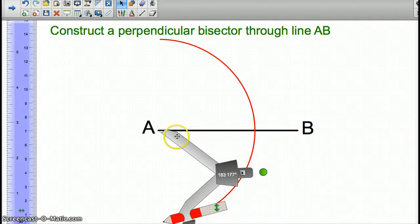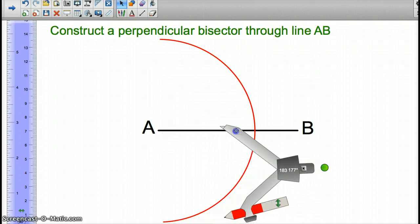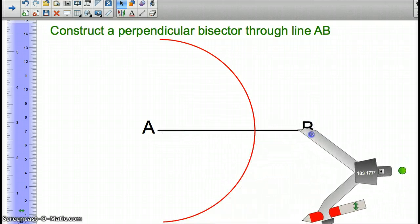Now, keeping that exact same distance, we are then going to move the compass to B, and we are going to create the exact same arc, but on this side.